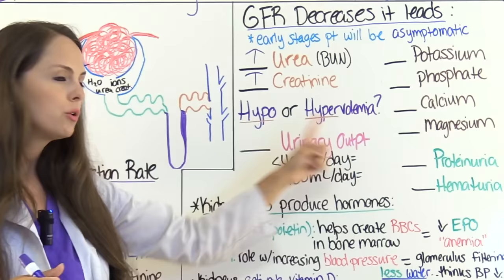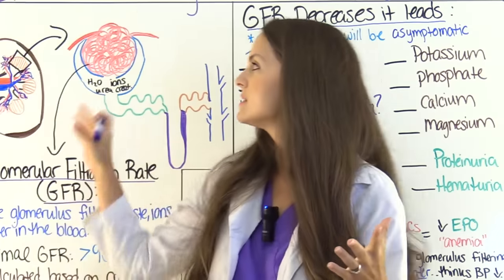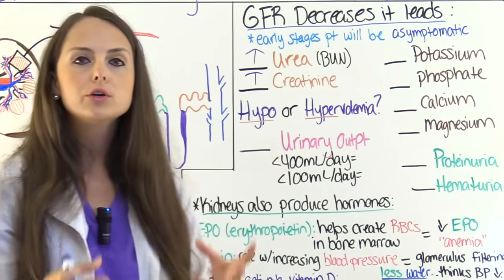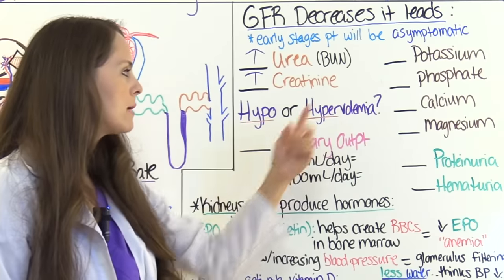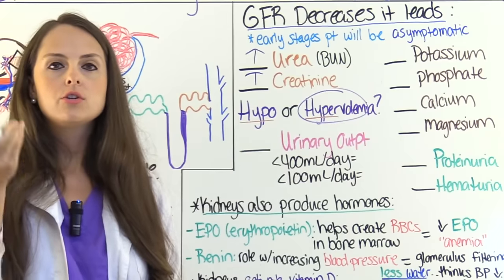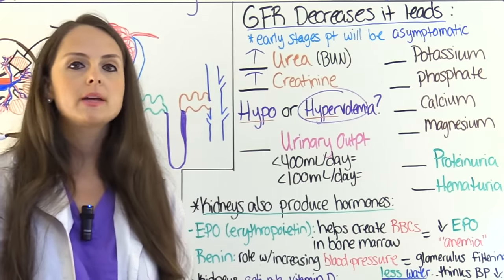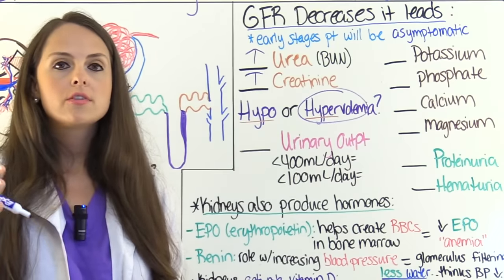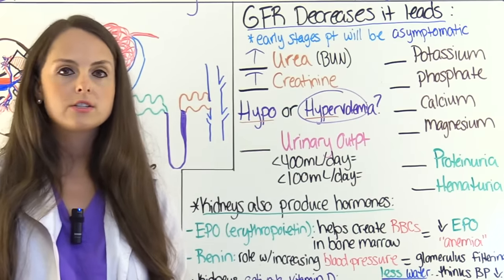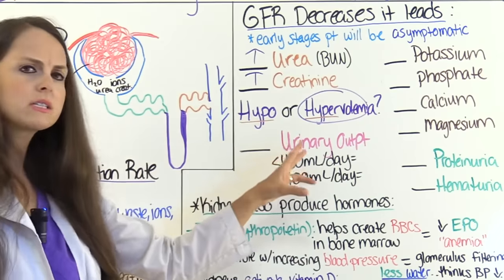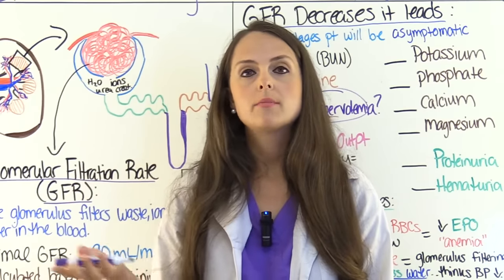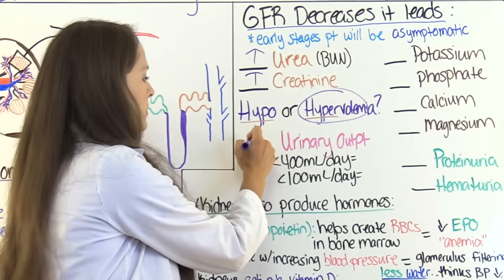The glomerulus is also not removing water as it should, so that water stays in the blood causing fluid overload — the patient will be hypervolemic. With too much water in the blood, blood pressure will be high, causing hypertension. This can put pressure on the heart, making it weak, which can lead to fluid backing up into the lungs causing pulmonary edema and cardiac issues. Urinary output will be low — if it's less than 400 milliliters per day, that's called oliguria.